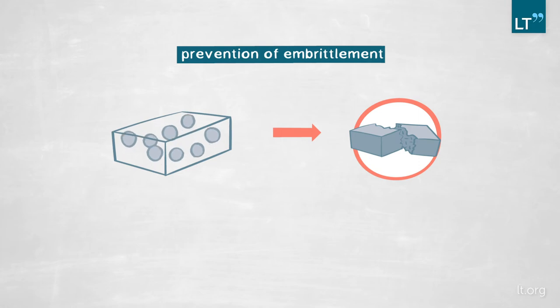But what we've shown is that by putting some of these particles inside of the steel, these particles can trap the hydrogen, locating it in a specific phase, preventing it from going around and causing mayhem.